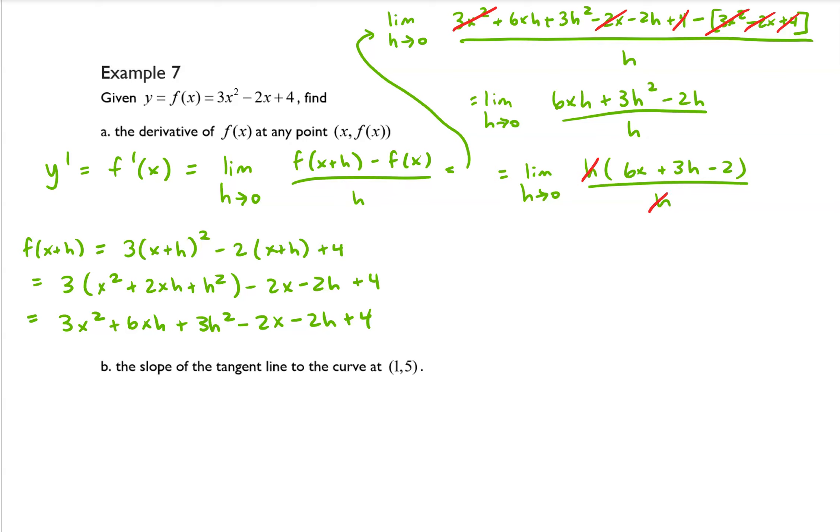This h and this h will divide, and so that equals the limit as h goes to 0 of 6x plus 3h minus 2. And if we plug in 0, that's just going to give us 6x minus 2.